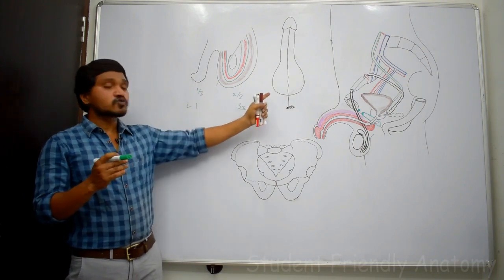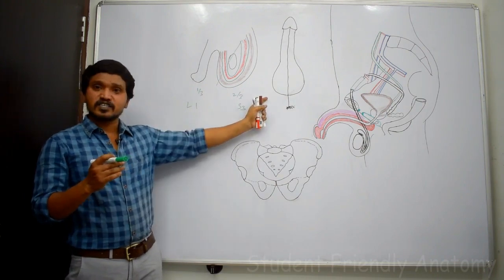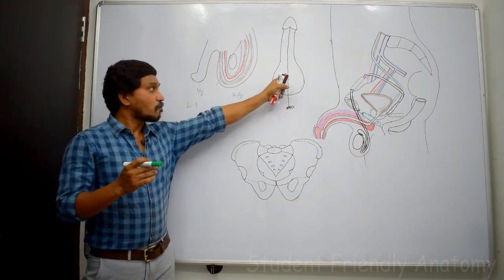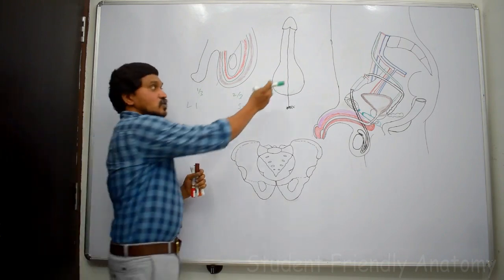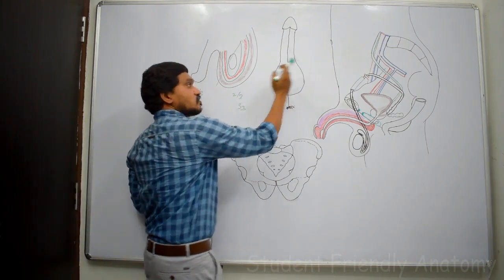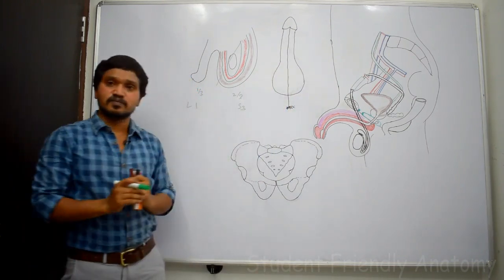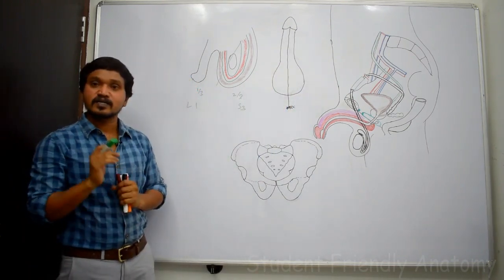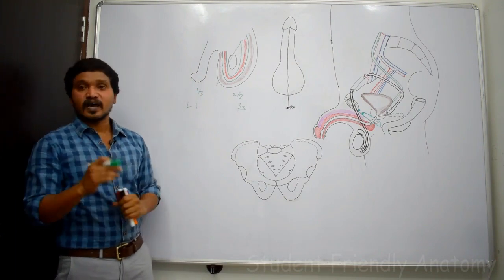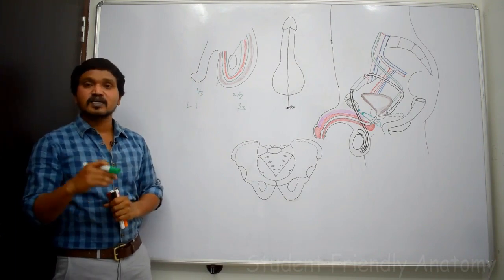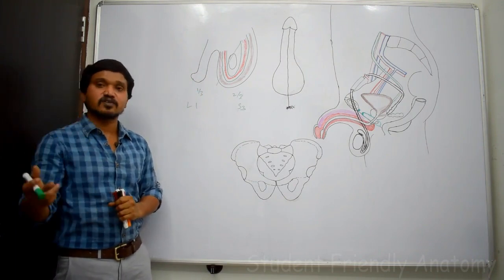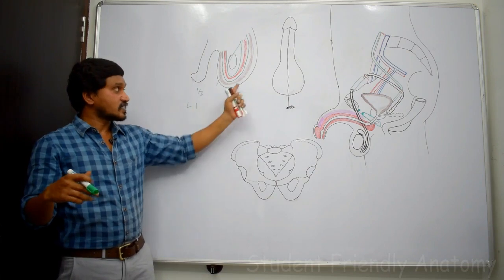In pseudohermaphrodite individuals, we can observe a bifid scrotal sac — that means the scrotal sac will be divided into two halves in pseudohermaphroditism. Another applied aspect is hydrocele; we will discuss hydrocele in detail with the testis itself.